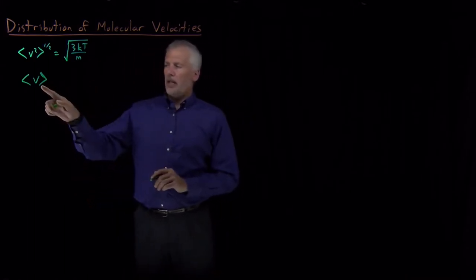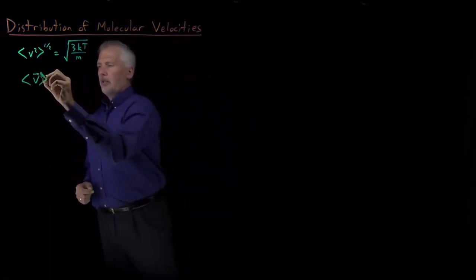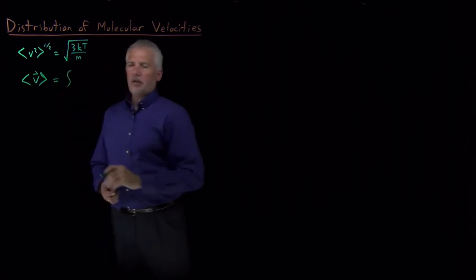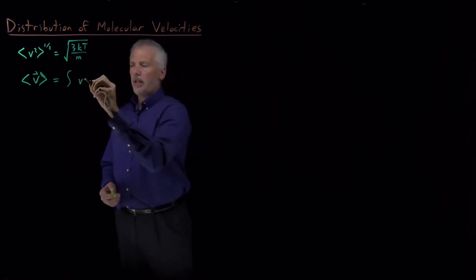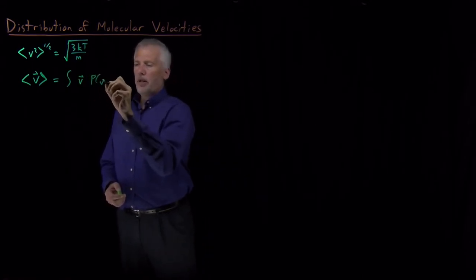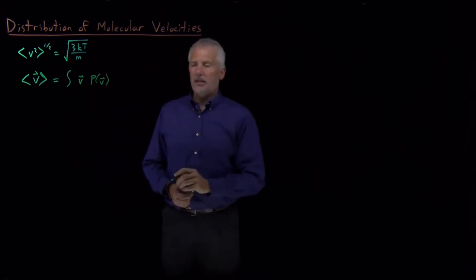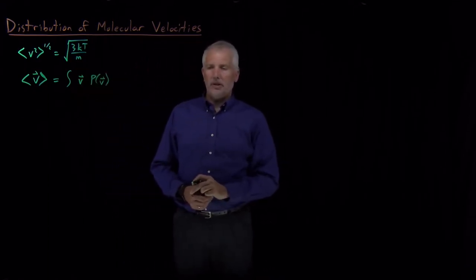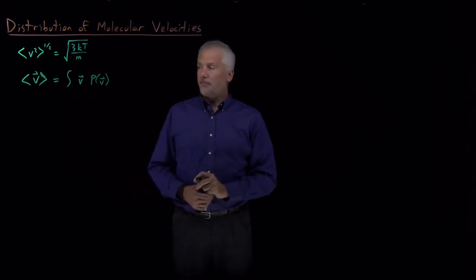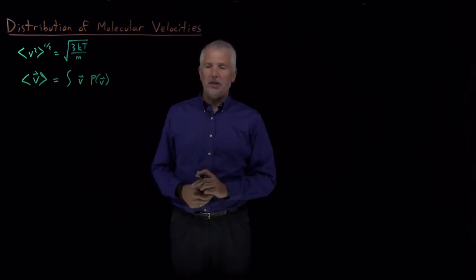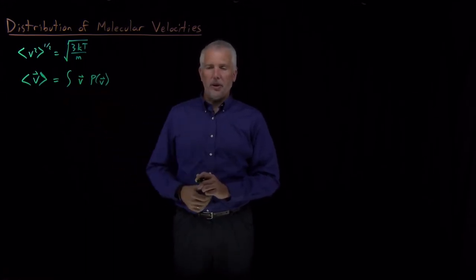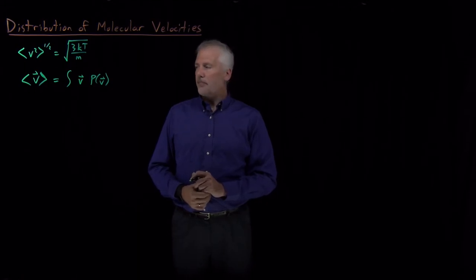To calculate the average velocity of a gas molecule, we take the individual velocities, multiply by the probability of having that velocity, and integrate over all the possibilities — that's how to calculate an average. Some fraction of molecules are moving at 100 meters per second, some at 200 meters per second in one direction or another. Combine all those together and we get the average velocity.